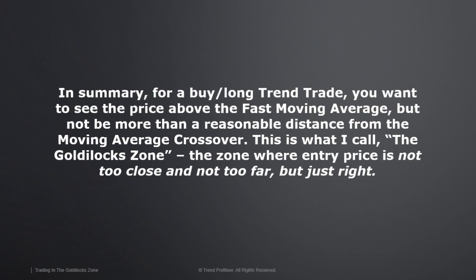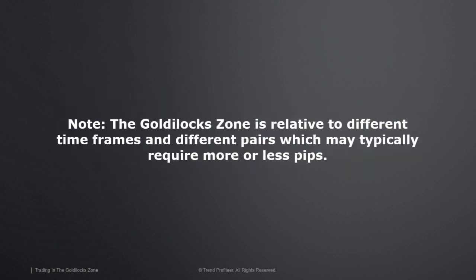In summary, for a buy/long trade, you want to see the price above the fast moving average, but not more than a reasonable distance from the moving average crossover. This is the Goldilocks zone — the zone where entry price is not too close and not too far, but just right. Note that the Goldilocks zone is relative to different time frames and different pairs, which may typically require more or less pips.